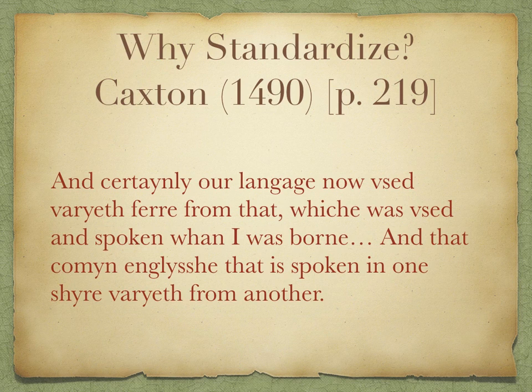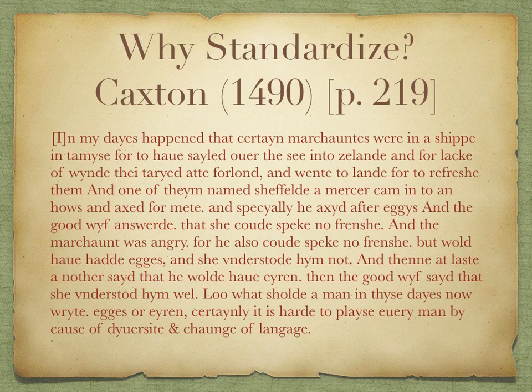He writes — I'll read it with a modern English pronunciation: 'And certainly our language now used varies far from that which was used and spoken when I was born.' It's a classic 'kids today' complaint. And he goes on: 'And that common English that is spoken in one shire varies from another.' So he's noting regional differences across different parts of England. He then illustrates this difficulty with variation across dialects through this little story. In my days, certain merchants were in a ship, ready to sail over the sea into Zealand, and for lack of wind they tarried at Forland in England and went to land to refresh themselves. One of them, named Sheffield, a mercer from the middle part of England, came into a house.